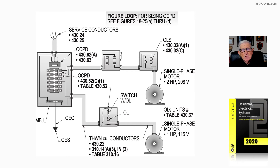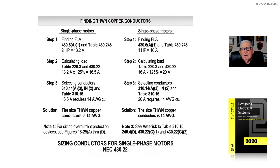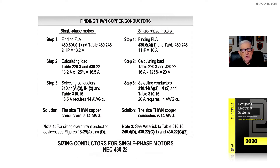Let's pick up the bottom motor listed in Figure 18-1. It's a single-phase motor, one horsepower, 115-volt rated, supplied by a 120-volt circuit, with THWN copper conductors referenced. Three sections are referenced: 430.22, which is the 125% rule, and the golden rule that all designers and installers use first — 310.14A3 Informational Note 2.